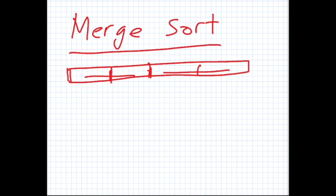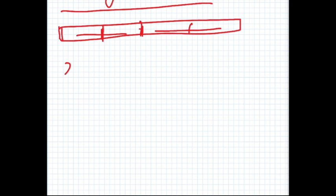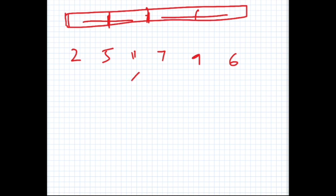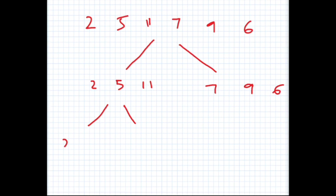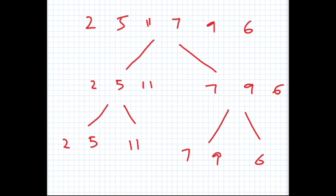Let's say we have a set of numbers: 2, 5, 11, 7, 9, and 6. Our job is to sort these using merge sort. We build a tree structure — 2, 5, 11 on one side and 7, 9, 6 on the other. We split again: 2 and 5 on one part, 11 on the other. Since we have an odd number, we use two elements on the left child and one on the right.